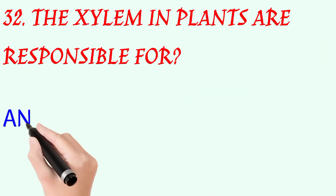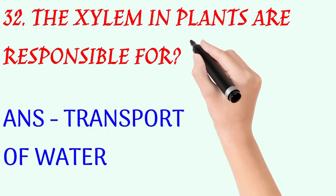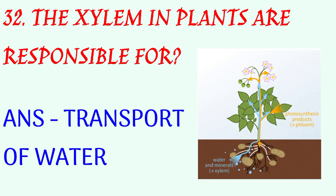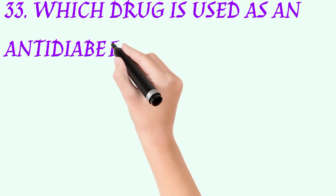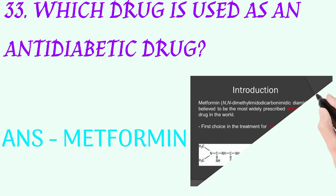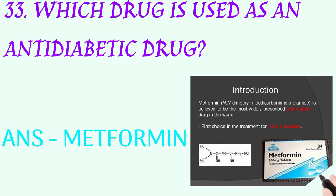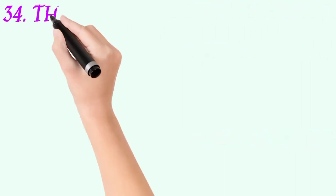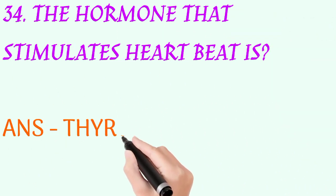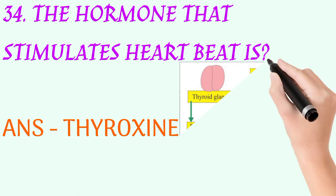The xylem in plants is responsible for? Answer: transport of water. Which drug is used as an anti-diabetic drug? Answer: metformin. The hormone that stimulates heartbeat is? Answer: thyroxine.